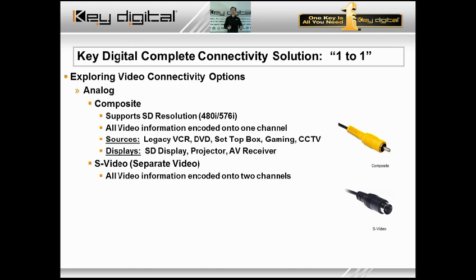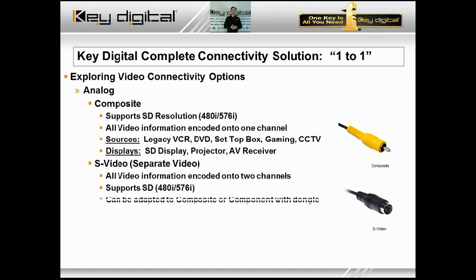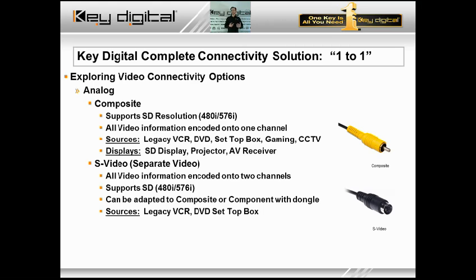S-video stands for Separate Video. Unlike composite, which encodes everything onto one channel, S-video encodes the signal onto two channels — still supporting 480i and 576i. You can use S-video to composite adapters or S-video to component dongles, breaking out the S-video pin connection onto a single RCA or three RCAs. S-video is found in pretty much the same places as composite video.